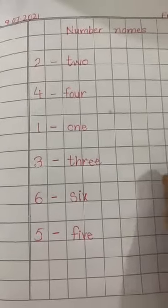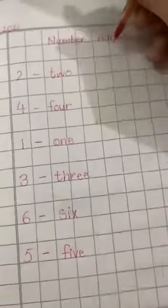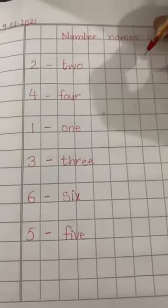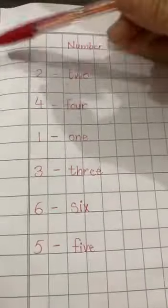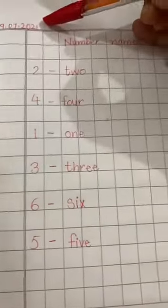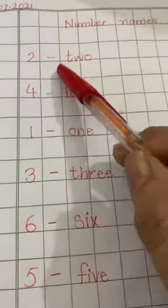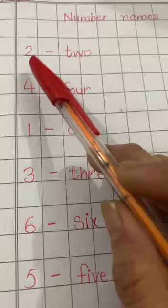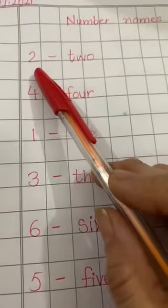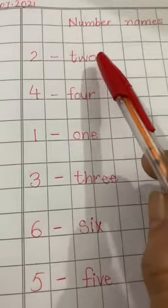Morning, welcome you all in math class. Today we'll do dodging number names. Yes students, write down the date and day. Let's practice dodging number names. What is the spelling of two? It's T-W-O.